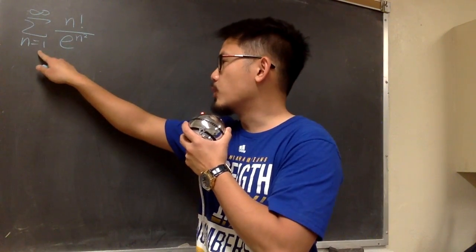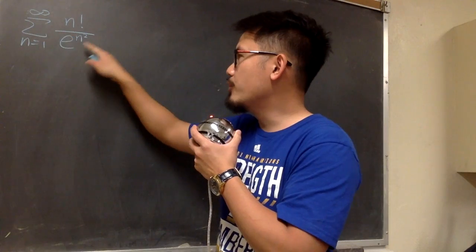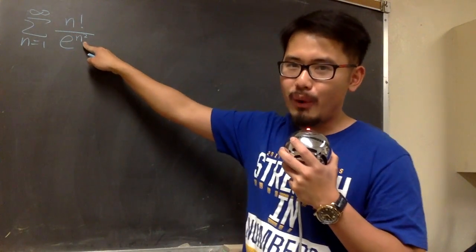Convert to diverge sigma when n goes from 1 to infinity, n factorial over e to the n squared power.